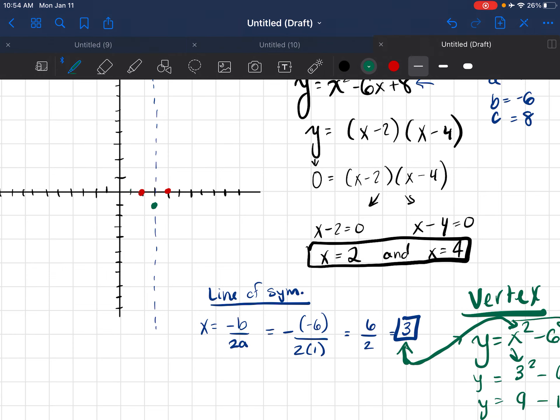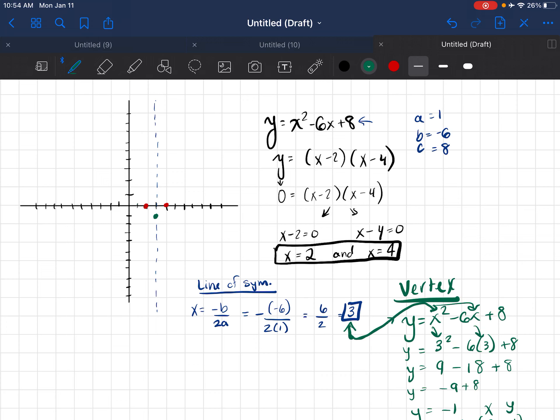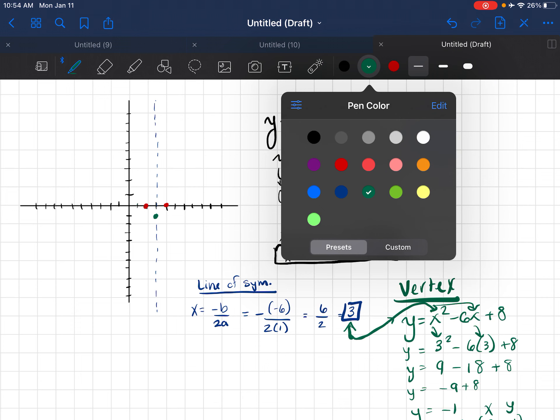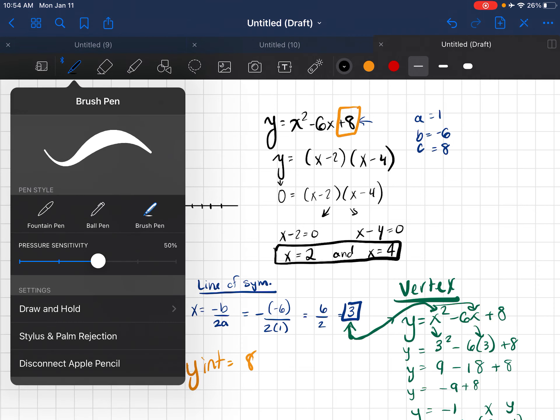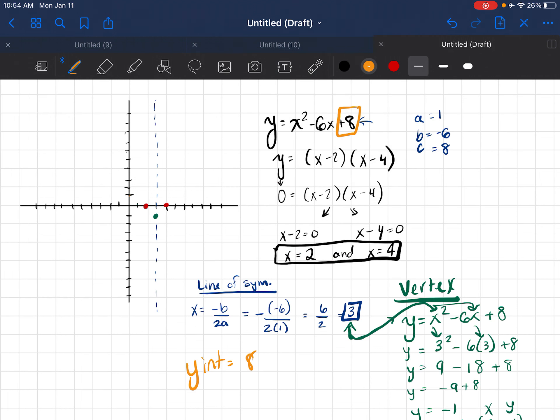Now I want to find the y-intercept. I know that the y-intercept is going to be equal to my c term. So my y-intercept is going to be 8. So I can count up to 8 on the y-axis. And that is going to be my y-intercept.